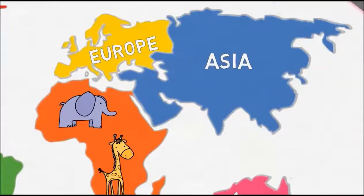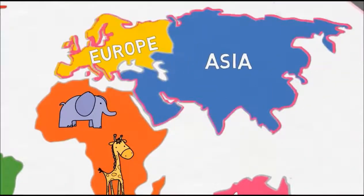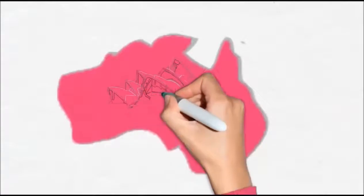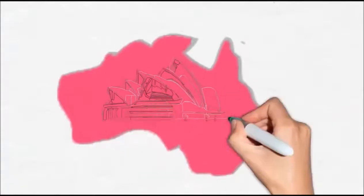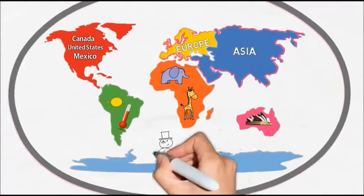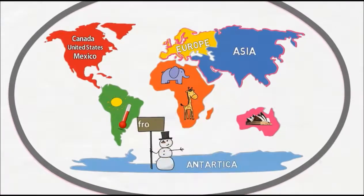Next is Europe and then there's Asia. Together they're the largest landmass cause they're neighbors. And we can go to Australia down under, where the Sydney Opera House is a known world wonder. And last is Antarctica down at the bottom — the whole thing is frozen like Elsa and Anna.